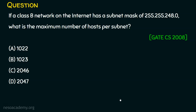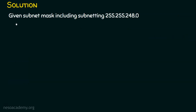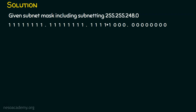Let's dive into the solution. The subnet mask given is 255.255.248.0. Converting this to binary: the first two octets are 255, so they are all ones. For 248, it is five ones followed by three zeros. The last octet is zero, so all bits in the fourth octet are zero.